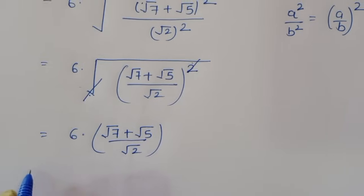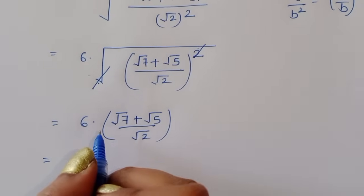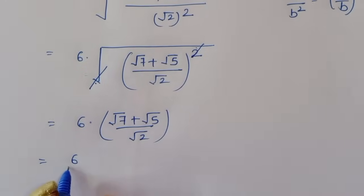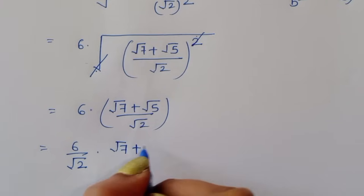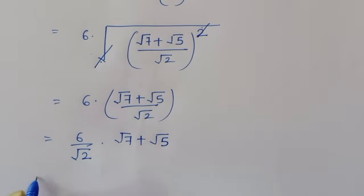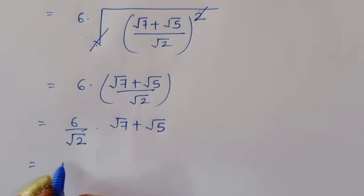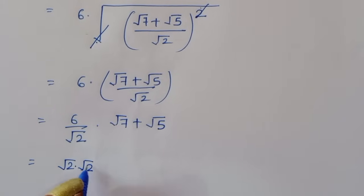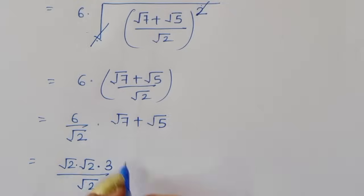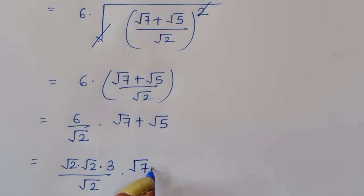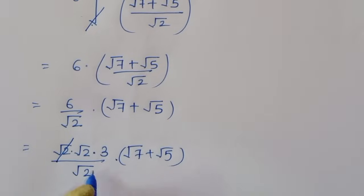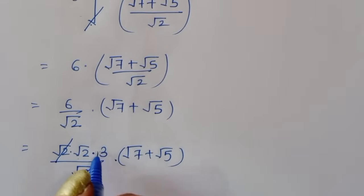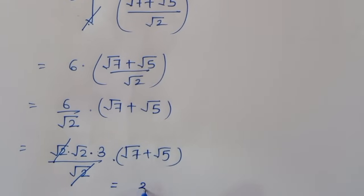Now we separate the term: 6 divided by square root of 2 times (square root of 7 plus square root of 5). We write 6 as square root of 2 times square root of 2 times 3, so square root of 2 cancels, leaving 3 times square root of 2.